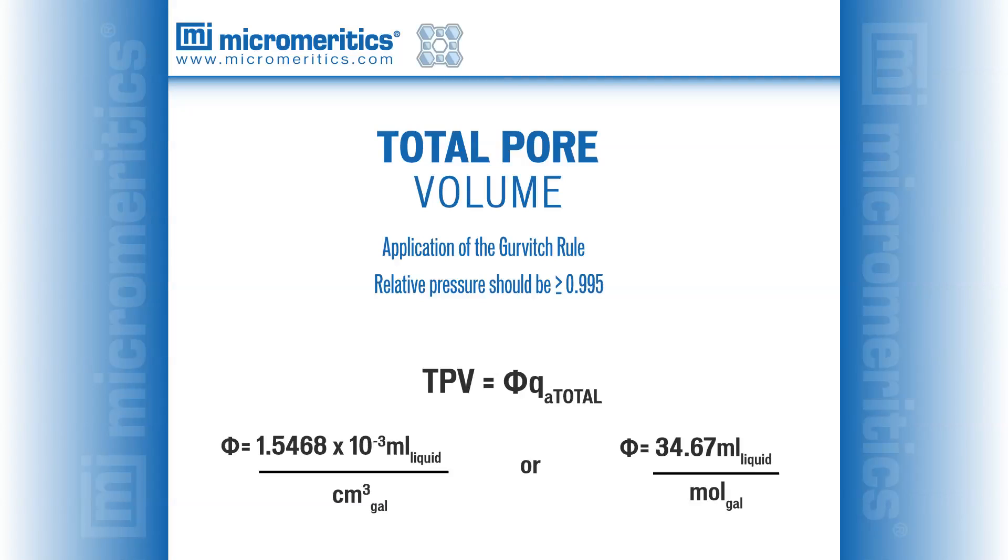For the common case of nitrogen adsorption, the simple equation T times P times V equals phi times Q sub A is used to estimate pore volume. Phi converts quantity adsorbed to a liquid volume, and this liquid volume is commonly accepted as the pore volume.